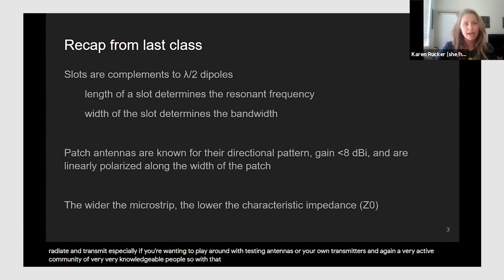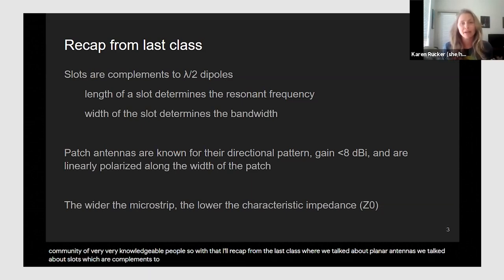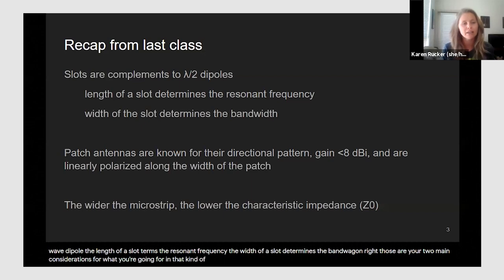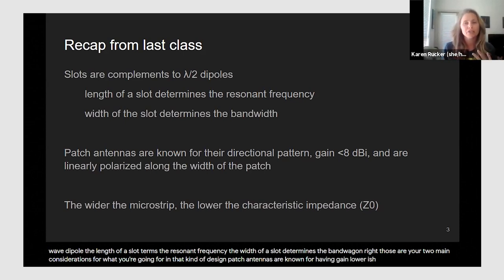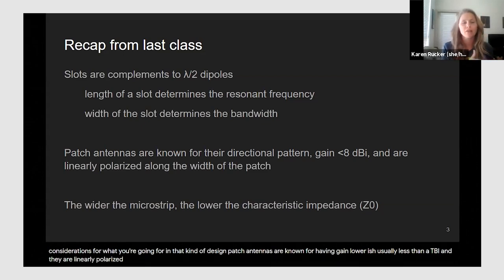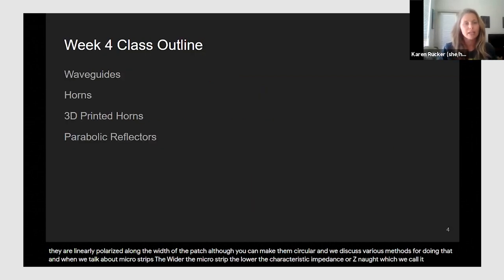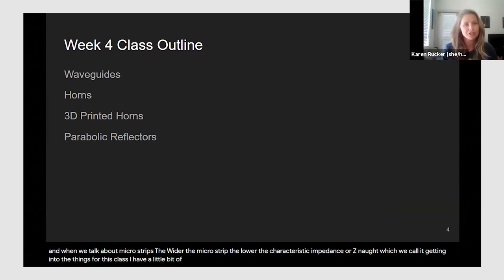To recap from last class: we talked about planar antennas and slots, which are complements to half-wave dipoles. The length of a slot determines the resonant frequency; the width determines the bandwidth. Patch antennas have a directional pattern, gain usually less than 8 dBi, and are linearly polarized along the width — though you can make them circularly polarized. For microstrips, the wider the microstrip, the lower the characteristic impedance, or Z-not.